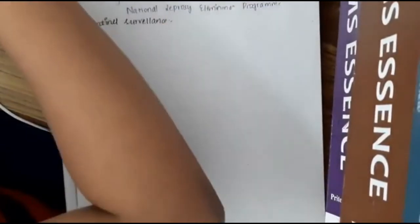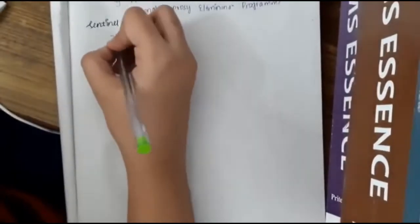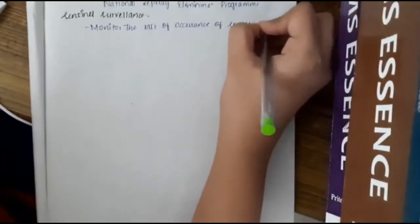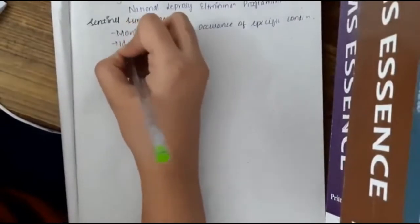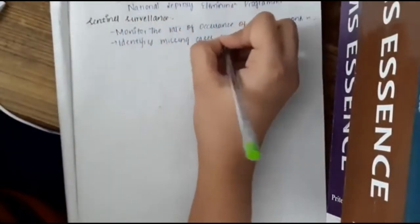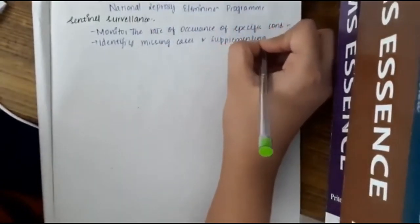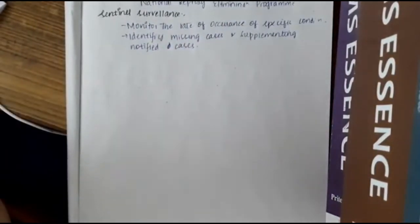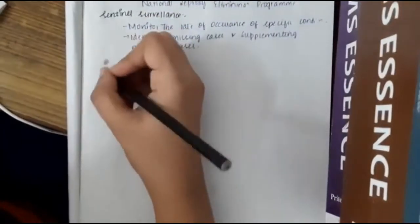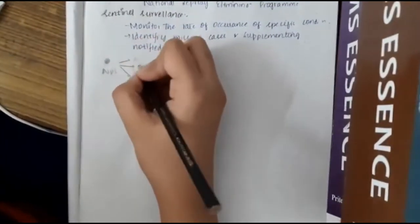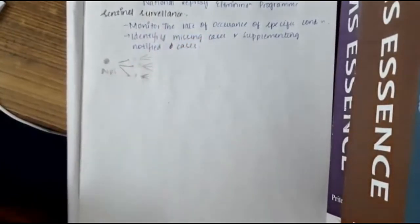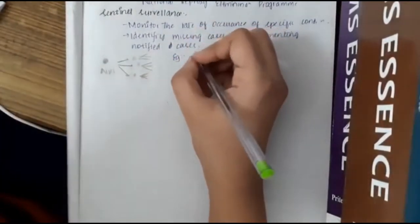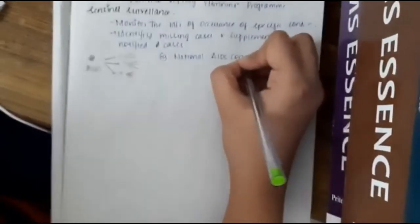Sentinel surveillance involves monitoring the rate of occurrence of a specific condition, identifying missing cases, and supplementing notified cases. An example is the National AIDS Control Program, where a person with AIDS is asked who they had contact with, and then those contacts are traced, and from those persons their contacts are traced — helping find missing cases in the community.